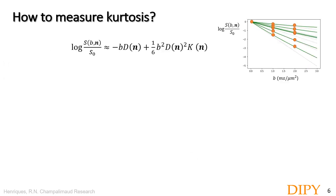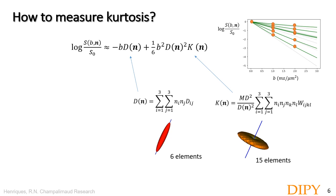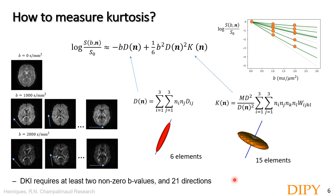In this slide, I'm showing how we can fit DKI at multiple directions simultaneously. This can be done by inserting the diffusion and kurtosis tensor equations into the 1D DKI expression. Since the kurtosis tensor captures higher order angular information, it is a higher order tensor than the diffusion tensor. While the diffusion tensor has six unique elements, the kurtosis tensor has 15 elements. So in DKI we estimate a total of 21 parameters, which is why acquisitions need to be performed across at least 21 directions distributed across different non-zero B values, in addition to B0 acquisitions.